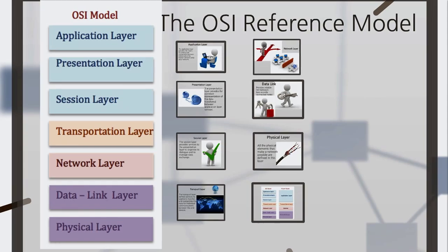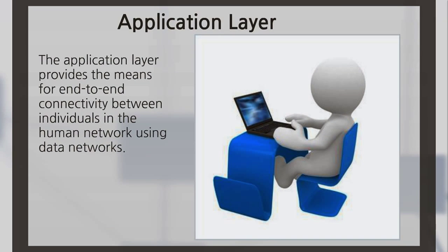The application layer provides the means for end-to-end connectivity between individuals in the human network using data networks. It offers applications the possibility to access the services of the next layers. It also defines the protocols used by applications to interchange data, like sending emails, for example. The user doesn't interact directly with the application layer, but with programs that do interact with it in order to make it simple and doable.